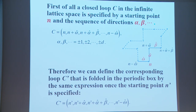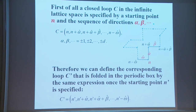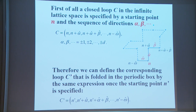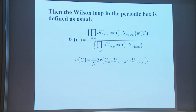A closed loop C in the infinite lattice space is specified by a starting point n and the sequence of directions α, β, and so forth. We can define the corresponding loop C' that is folded in the periodic box by the same expression once the starting point n' is specified. Then the Wilson loop in the periodic box is defined as usual.